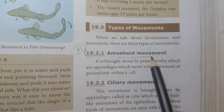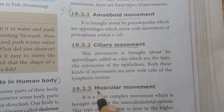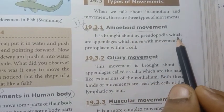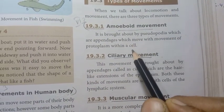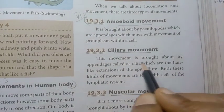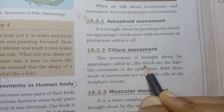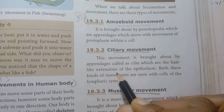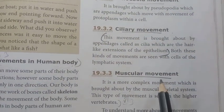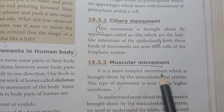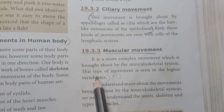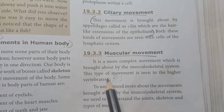Types of movement include amoeboid movement, ciliary movement, and muscular movement. Amoeboid movement is brought about by pseudopodia, which are appendages that move with the movement of cytoplasm within the cell. Ciliary movement is brought about by appendages called cilia, which are hair-like extensions of the epithelium. Muscular movement is a more complex movement brought about by the musculoskeletal system, seen in higher vertebrates.